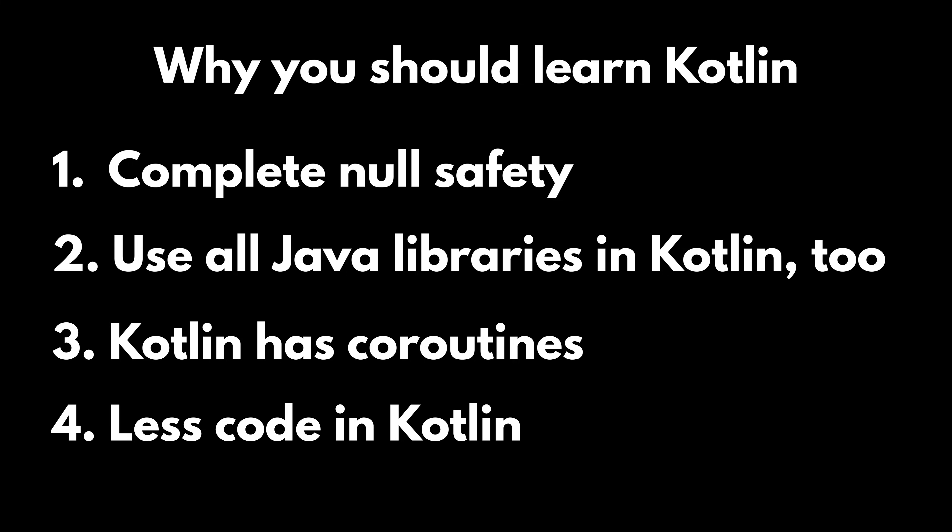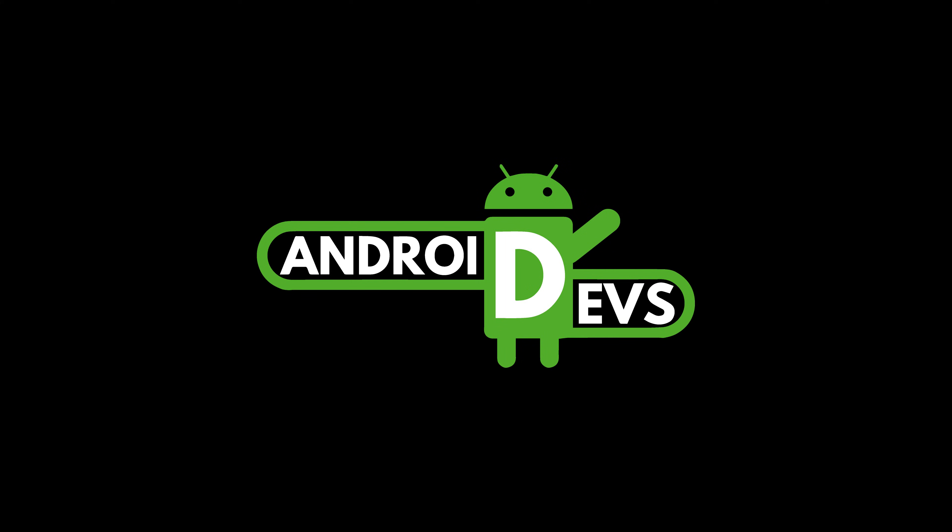Finally, Kotlin code is way more compact than Java code. If you have a function in Java and you code that same function in Kotlin with the same functionality, in most cases you have to write a lot less in Kotlin, because Kotlin has many cool functions that aren't available in Java that make your code very short. To finish this video off, I will show you some code examples of Java and Kotlin to demonstrate that Kotlin code is in most cases much shorter. If you're a complete newbie, these examples aren't about functionality you have to understand — just focus on how much shorter the Kotlin code is.